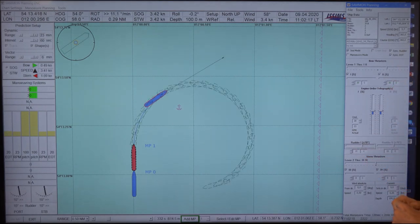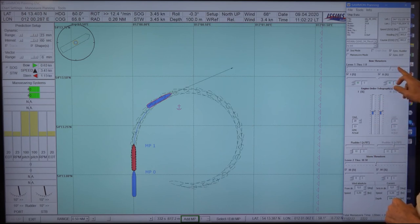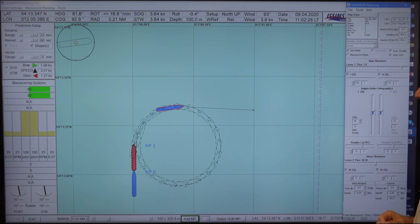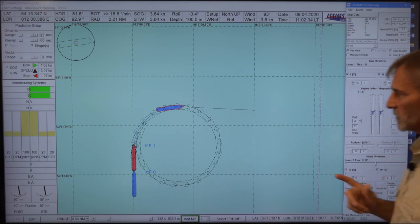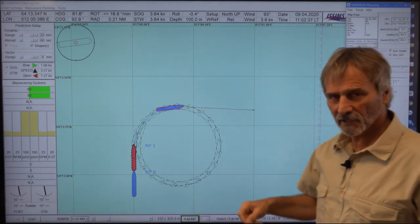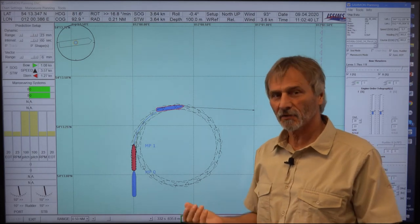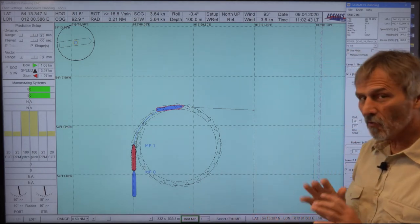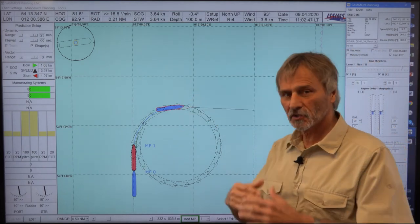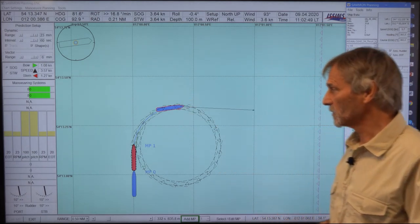So I reduce the rudder maybe to 10 degrees and the bow thruster to 30 degrees or 50 degrees and then you see the big difference. This is a bow thruster with 80 percent to starboard and the big difference is that you see the shapes of the ships are lined up like pearls on a chain for instance.